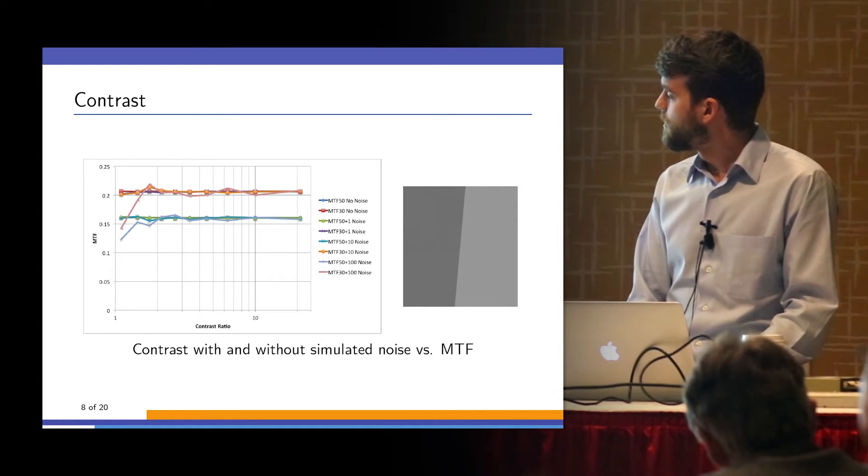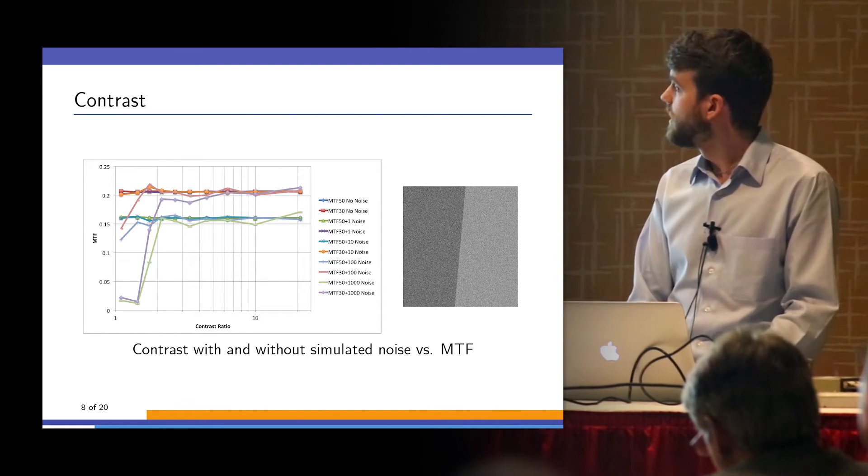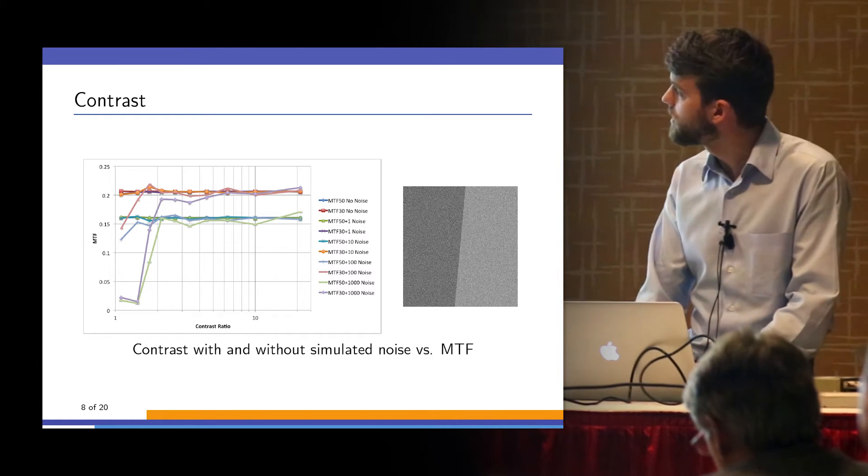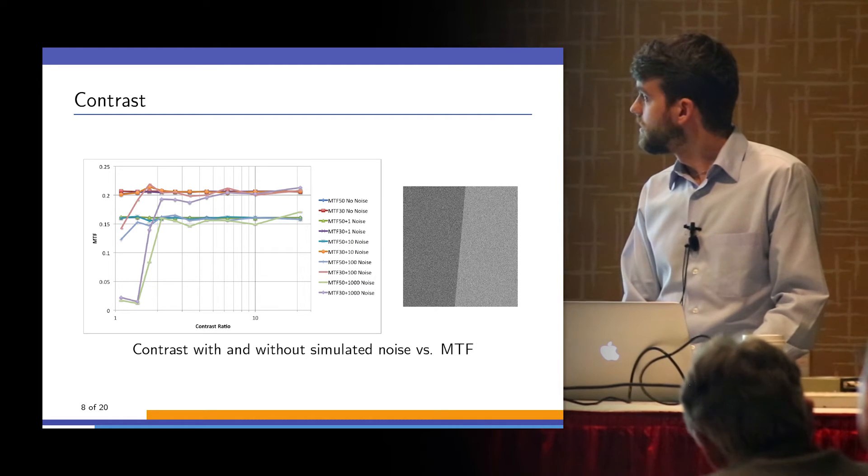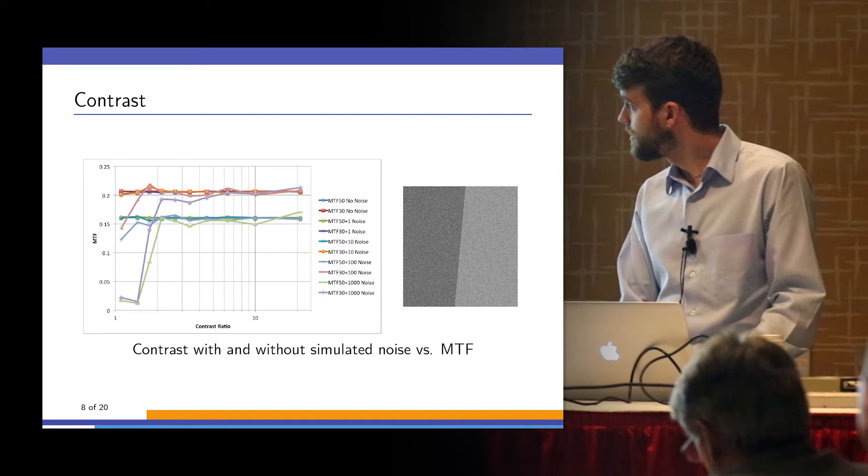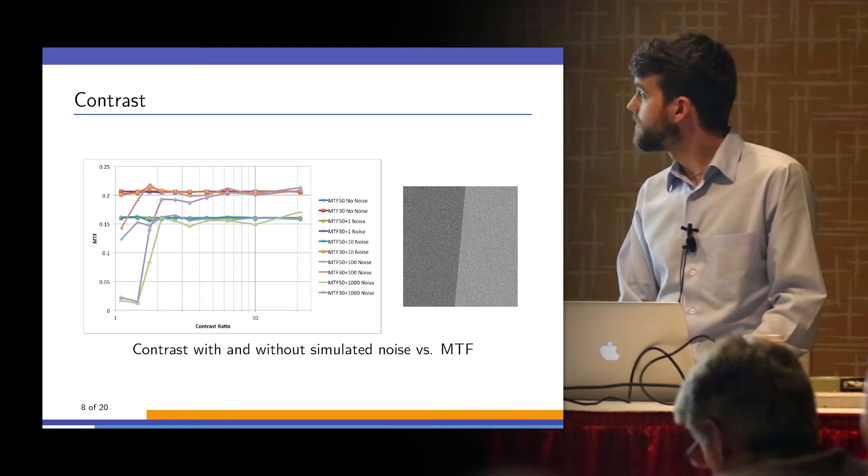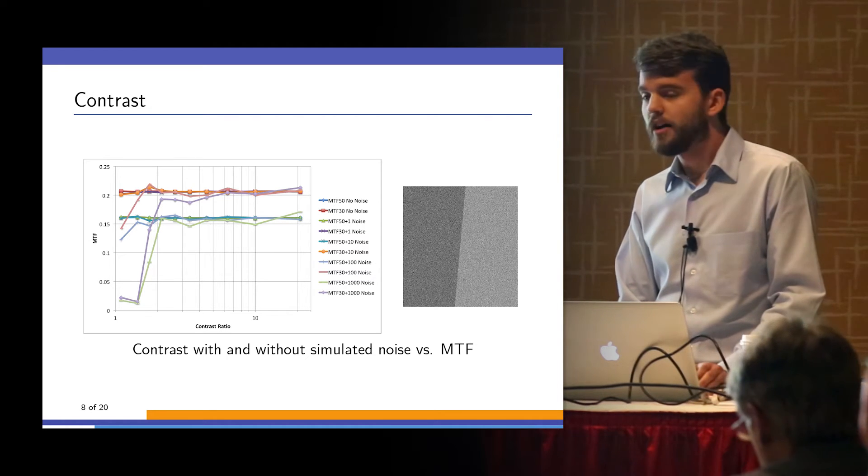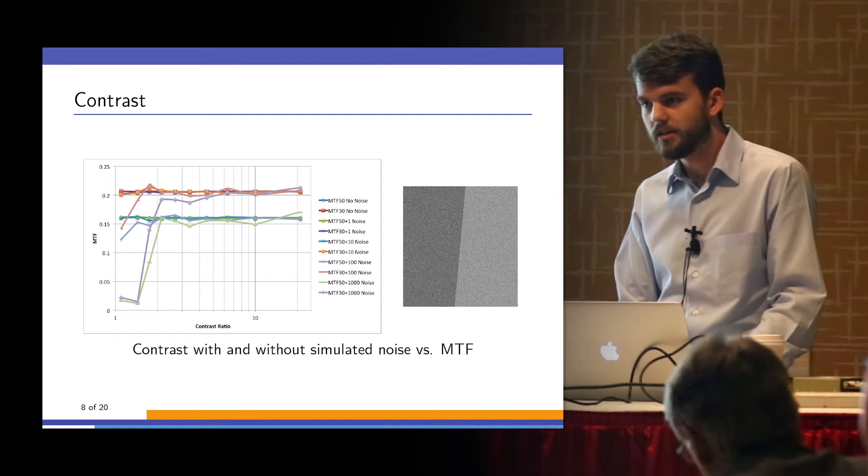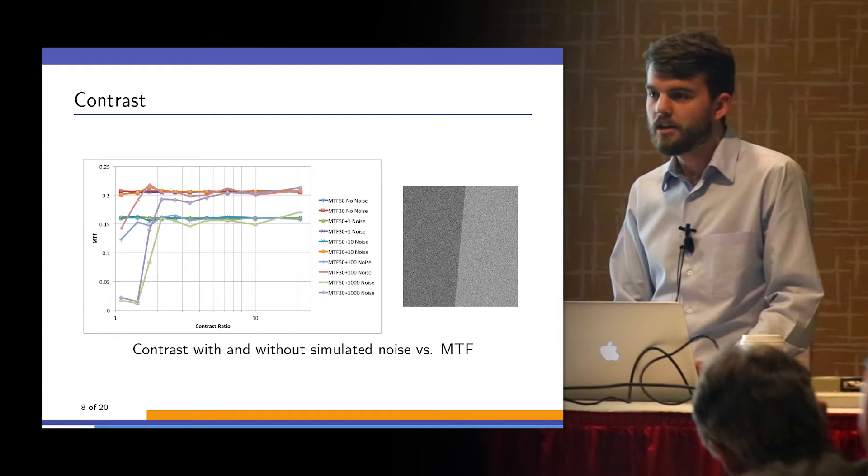As we continue to add noise, we start to see more and more significant effects. And then, as we add very significant amounts of noise, you can see at the very low contrast, basically everything below two to one, you start to get dramatically lower MTF values. It turns out that at these very low contrast levels and very high noise levels, it becomes almost impossible for the algorithms to detect the edge. The line fits and the centroid calculation according to the ISO standard method is just not accurate enough.